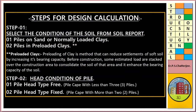Steps for the design calculation. Step one: select the condition of the soil from the soil report. Soil condition number one — pile in sand or normally loaded clay; pile in preloaded clay. Preloading of clay is a method that can reduce settlement of soft soil by increasing its bearing capacity before construction, by stacking estimated load over the construction area to consolidate the soil. Head condition of pile: type 1 — free head pile cap with less than three piles; type 2 — fixed pile cap with more than two piles.